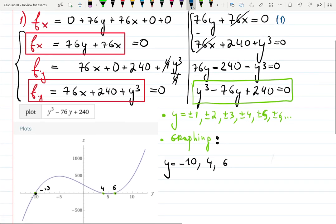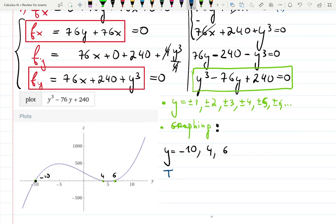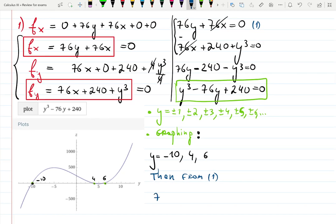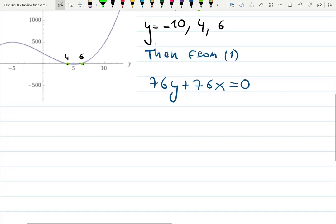If I rewrite it again, I will say then from equation one, which is 76y plus 76x equals to zero. This equation can be simplified. Let's divide by 76: y plus x equals to zero.